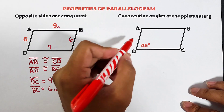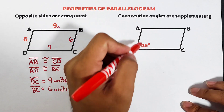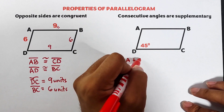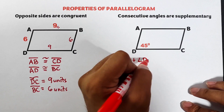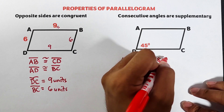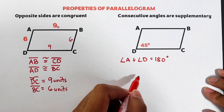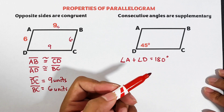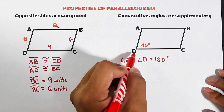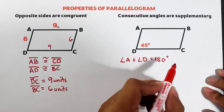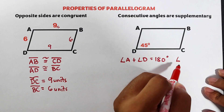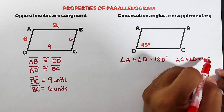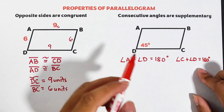Angle D is consecutive with angle A. Since they are consecutive, we can say that angle A plus angle D is equal to 180 degrees because they are supplementary. Another angle that is consecutive and supplementary with angle D is angle C. So we can create the equation: angle C plus angle D is equal to 180 degrees, because they are consecutive angles.